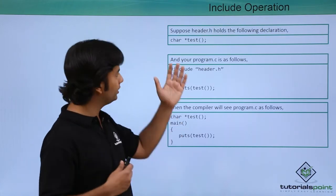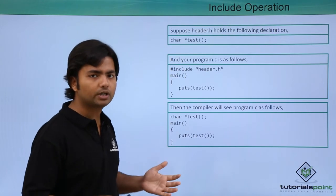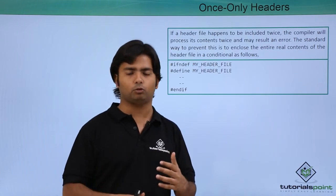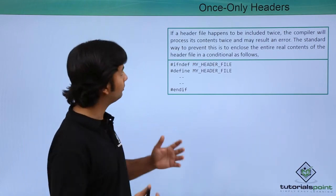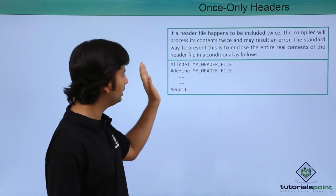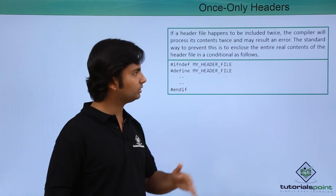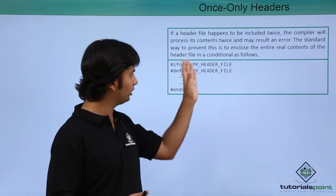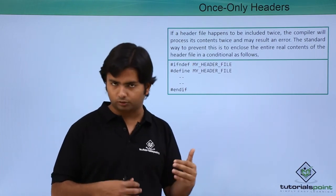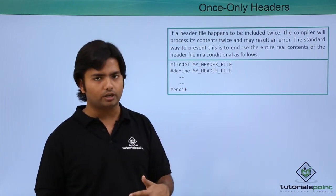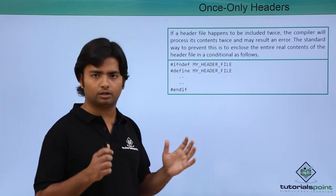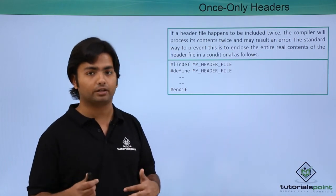When you are using and maybe by mistake, you have included a single header file twice, that may cause an error because you may get a multiple declaration of the same method. For that, you can use once-only headers. By using some other preprocessors like if not def, means if not defined, then define that header file. Even if it is defined earlier, if you have already included it, then it will not be included again, and it will help you get rid of those errors.